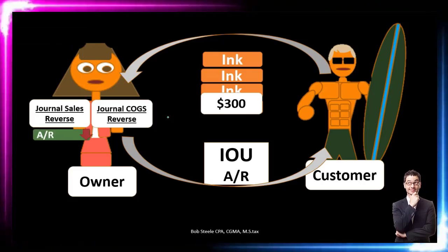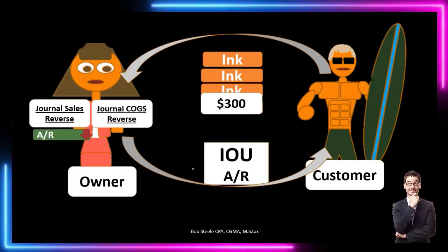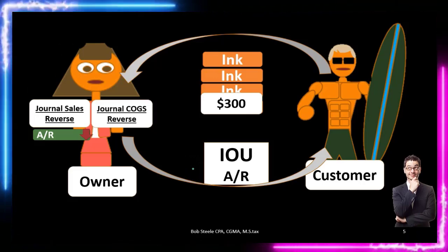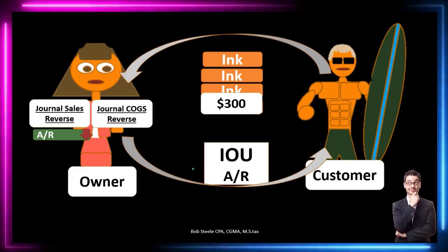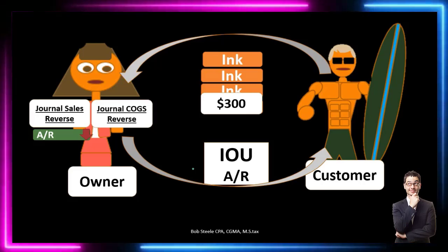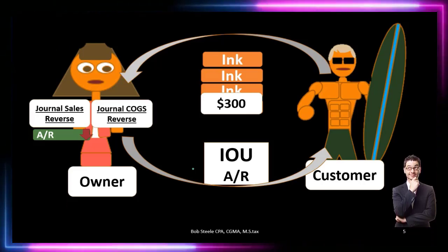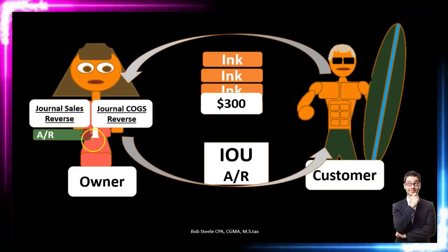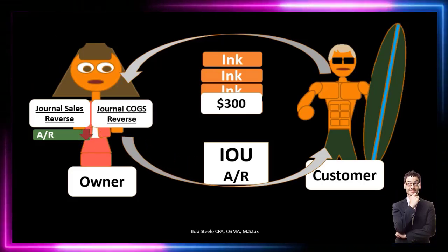Accounts receivable is going to go down — the IOU decreases because we never received payment in this case. What happened is they owed us money, never paid us, but gave the merchandise back — so we say they don't owe us money anymore. The accounts receivable will go down.